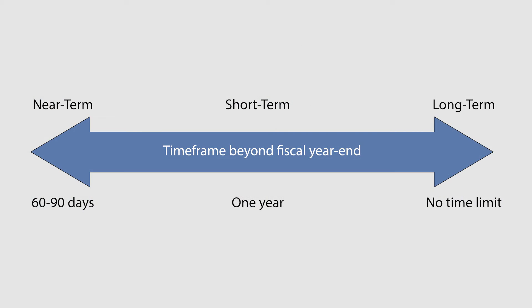The three approaches differ in terms of the length of the period beyond the end of the fiscal year that is the cutoff point for which assets and liabilities are reported. The near-term approach reports assets and liabilities normally due relatively soon after the end of the fiscal year, likely 60 to 90 days. Assets and liabilities under the short-term approach are normally due during a government's operating cycle — the subsequent year. The assets and liabilities reported in the long-term approach are not limited to a specific period beyond fiscal year end.